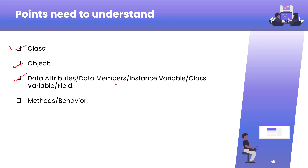Primarily you have to understand what is a data attribute, data member, instance variable, class variable, or field. Interchangeably we can use all these terms for whatever a data attribute is — it is the same as data member, instance variable, and class variable. A class can also contain methods, which represent the behavior. So let's try to understand what a class is, theoretically.